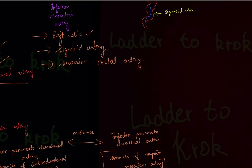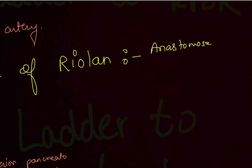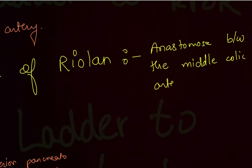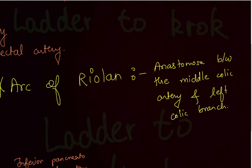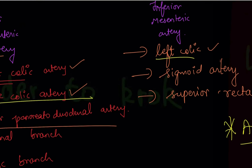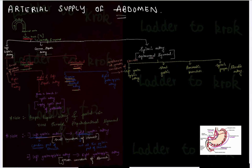There is something called the arc of Riolan — the fourth anastomosis. It is an anastomosis between the middle colic artery (which supplies the transverse colon) and the left colic artery (which supplies the descending colon). Remember all four anastomoses: left gastric with right gastric; left gastroepiploic with right gastroepiploic; superior pancreaticoduodenal with inferior pancreaticoduodenal; and the arc of Riolan between middle colic and left colic. That's the complete arterial supply of the abdomen. Thank you.